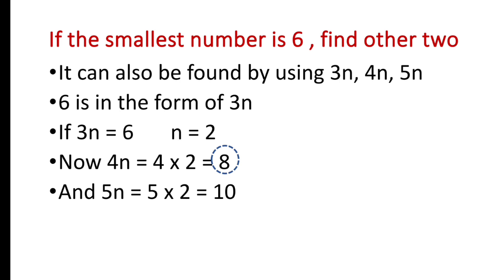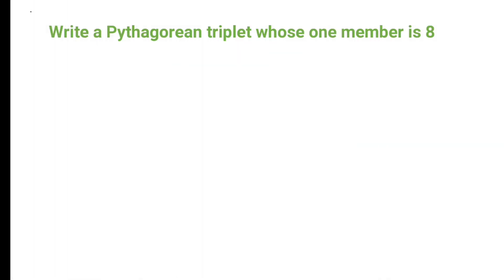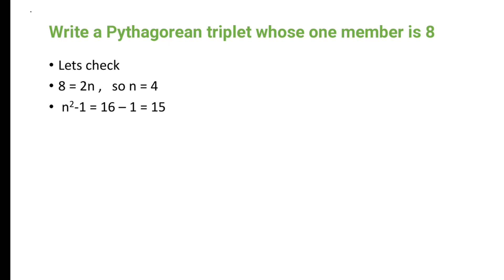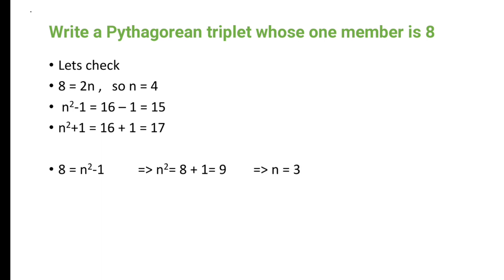Write a Pythagorean triplet whose one number is 8. First, check 2m = 8, so m = 4. Then m²−1 = 16−1 = 15 and m²+1 = 16+1 = 17. So one triplet is 8, 15, 17. But 8 can also be taken as m²−1: since 8+1 = 9 is a perfect square, we set m²−1 = 8, giving m² = 9 and m = 3.